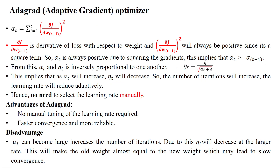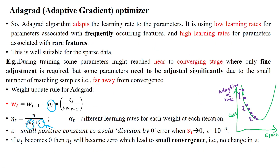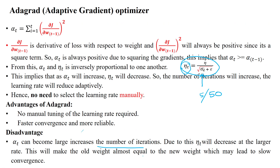One disadvantage is that when alpha_t becomes large, eta_t — being inversely proportional to alpha_t — becomes very small. For example, if alpha_t grows to values like 5 or 50, eta_t becomes very small, leading to very minimal updates to the new weight value. This causes slower convergence, making it harder to bring the cost close to zero. This is one of the main disadvantages of AdaGrad.